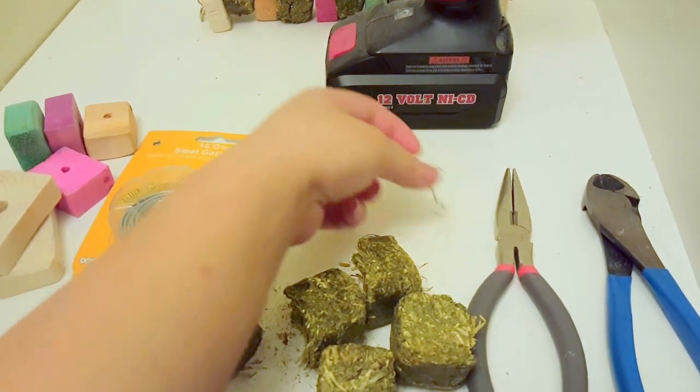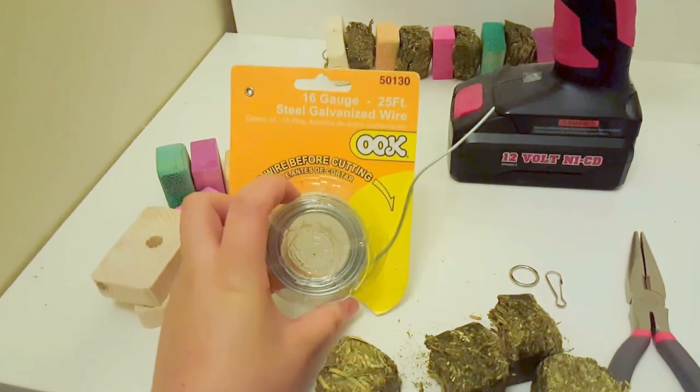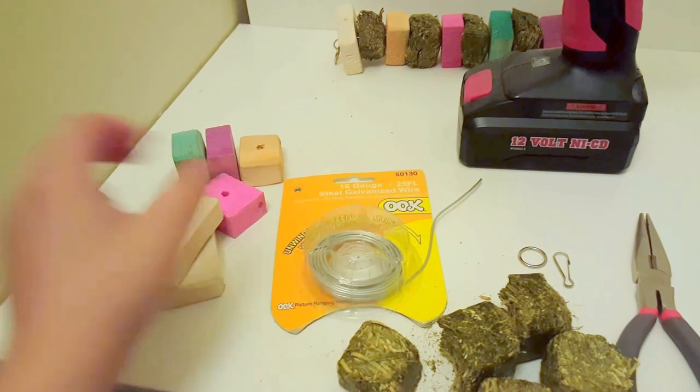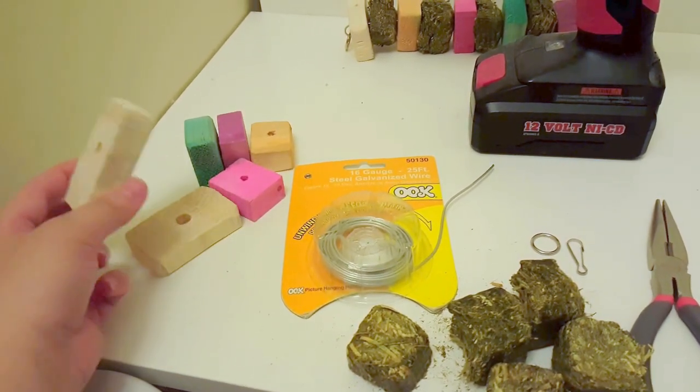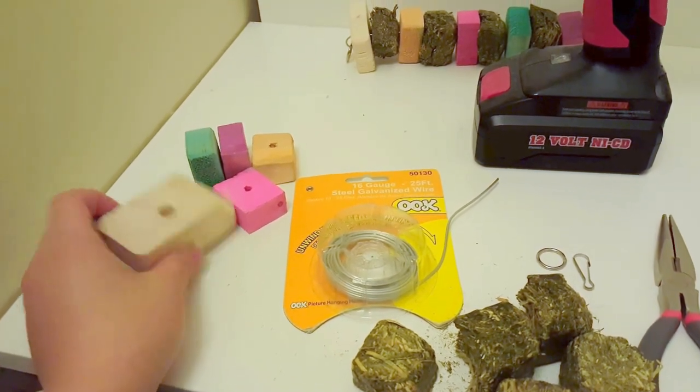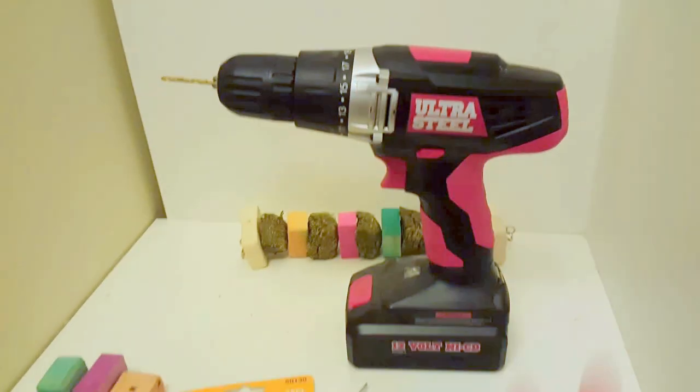A pear clip for hanging the toy and you're going to need 16 gauge wire. I got this at Home Depot. You can get the steel galvanized wire and then you're also going to need six of these pine cubes. I got these from Sunshine Chinchillas and I'll put their link down below on where to order these and then you also need a power drill.